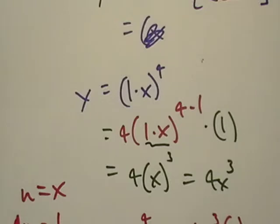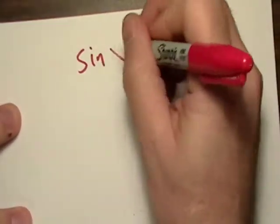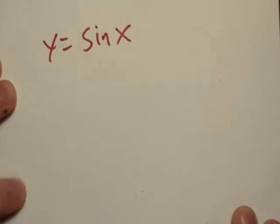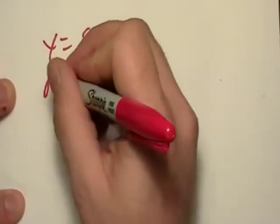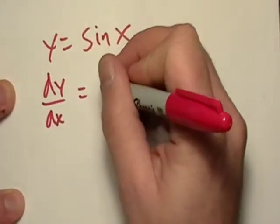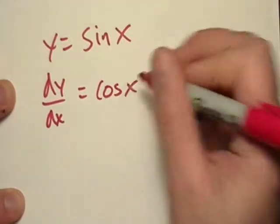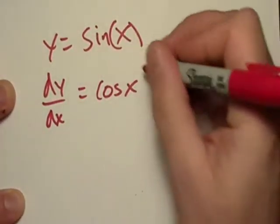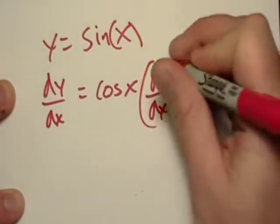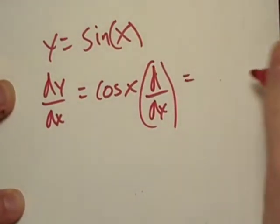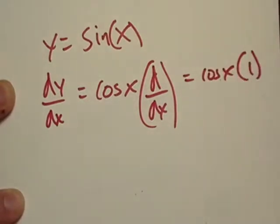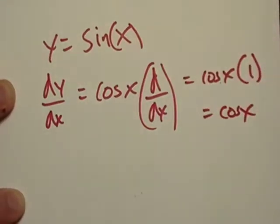It gets a little different, though. But really, every single formula you know so far has actually included that. And I'm going to show it to you right here with a sine of x. y equals sine of x, so dy dx equals cosine of x multiplied by the derivative of x, which equals cosine of x times 1, which is just cosine of x.